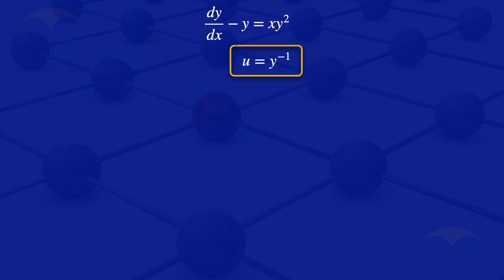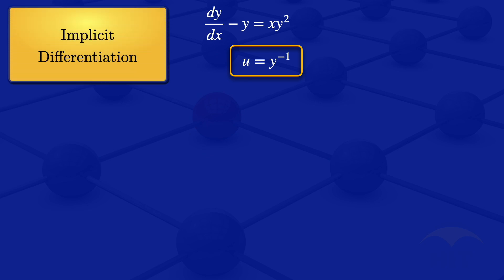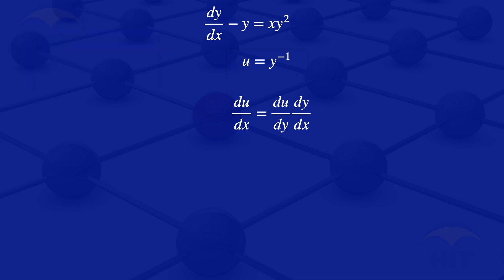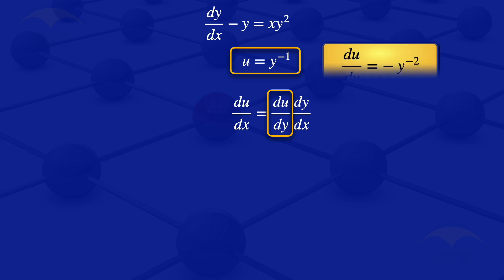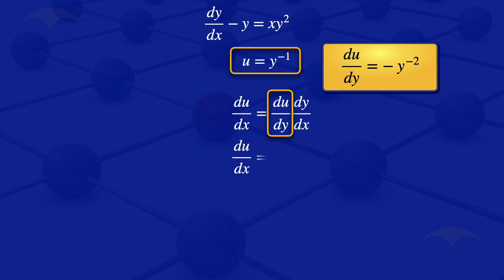Now looking at this substitution, we can use implicit differentiation, which says that the derivative of u with respect to x equals the derivative of u with respect to y multiplied by the derivative of y with respect to x. We differentiate u with respect to y, getting du/dy equals minus y to the power minus 2. Substituting this result, we have du/dx equals minus y to the power minus 2 multiplied by dy/dx.